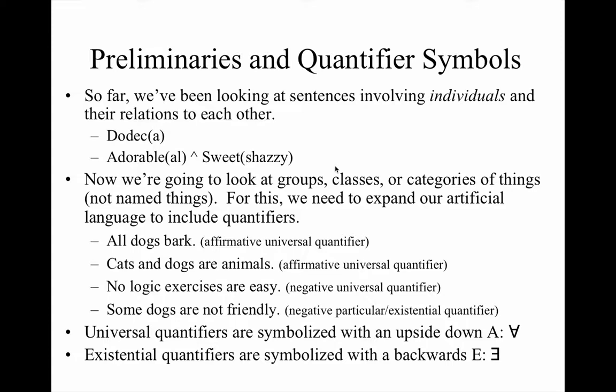First, we've been looking at atomic and compound sentences. Those atomic and compound sentences involve individuals. Think about the Tarski's World notation — we have individuals A through E. Any individual, that is any named entity, is known as an individual constant.